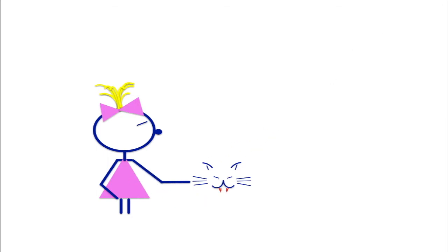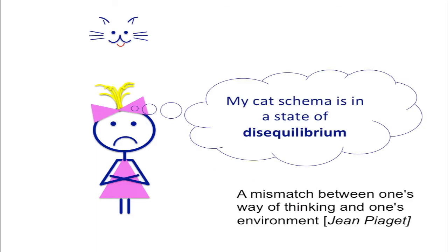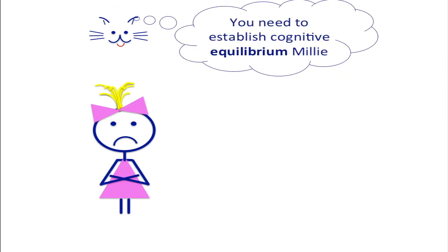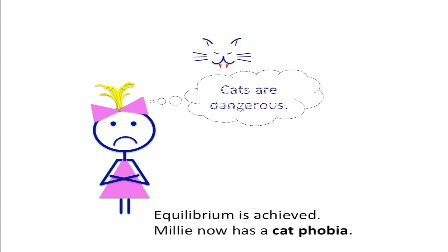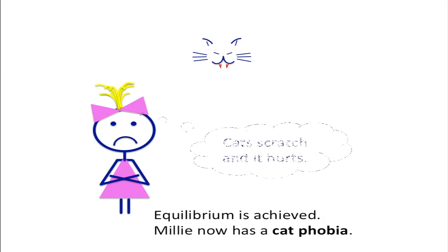But one day a cat scratched her and this caused disequilibrium of her cat schema. It became unbalanced and this new fear information went against her schema. But we all need to maintain equilibrium — a kind of mental balance, if you like. And Millie does this by establishing a phobia and then she makes sense of it in her own mind.